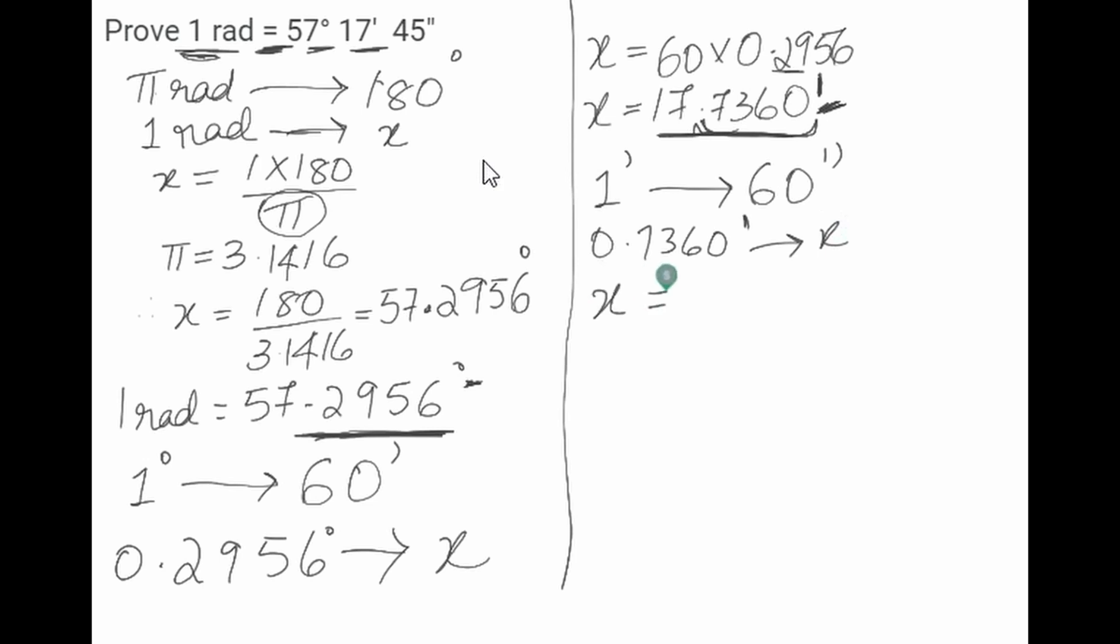x is equal to 60 into 0.7360, which is equal to 44.16 seconds.